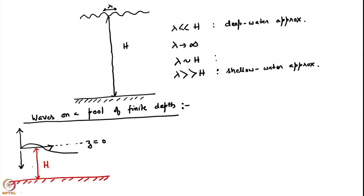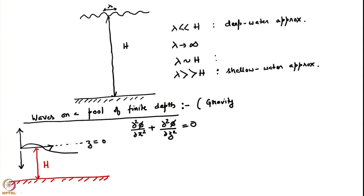We have the Laplace equation ∂²φ/∂x² + ∂²φ/∂z² = 0, as before. I am going to do it only for gravity waves — the homework for you is to include surface tension, which is just a modification to the pressure boundary condition, replacing pressure with (T/ρ) times the divergence of n. Right now I will assume pressure to be 0.